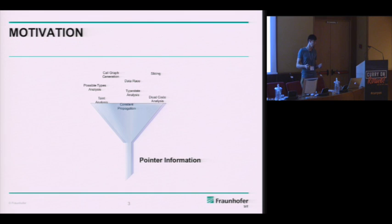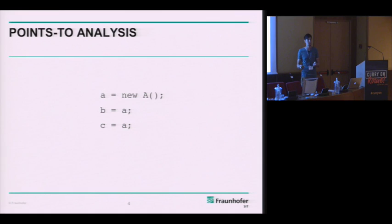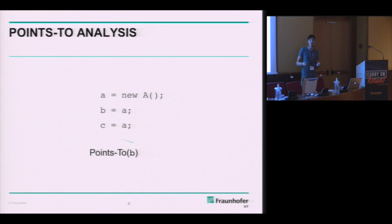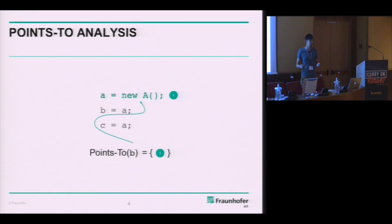I briefly want to discuss different pointer information that you can compute, because these vary according to different pointer analyses. In points-to analysis, you can trigger queries about variables in the program. For example, you can compute the points-to set of B by following the assignment chain backward, discovering that B has been allocated in the first line of the program. The points-to information is a set because it can have multiple allocation sites in static analysis.